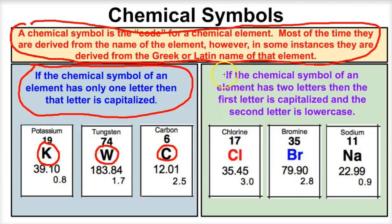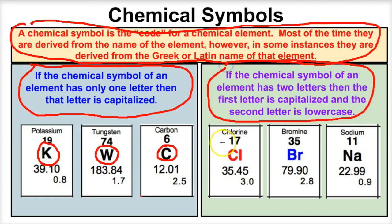If the chemical symbol of an element has two letters, then the first one is always going to be capitalized, and the second one will always be lowercase. For example, chlorine is capital C, lowercase l. Bromine is capital B, lowercase r. And sodium is capital N, lowercase a.